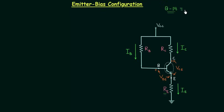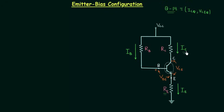First we will find out the coordinates of the operating point: ICQ and VCEQ. The Q stands for the Q-point, or the operating point.